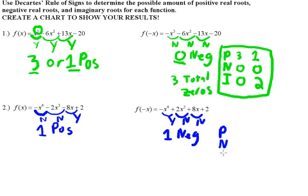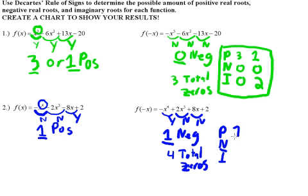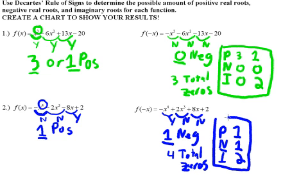Since there is exactly one positive zero and exactly one negative zero, there is only one case for this function. The degree is four, so there are four total zeros and each column must add to four. With one positive and one negative, that accounts for two zeros, which means there are two imaginary zeros. Descartes' rule really narrowed this down — we know there's exactly one positive, one negative, and two imaginary zeros, and this will all be part of the picture when we actually find all the zeros of each function.